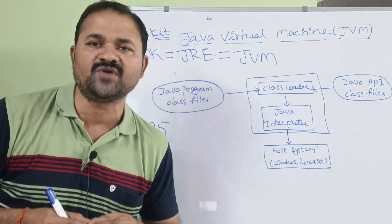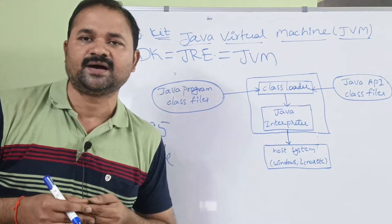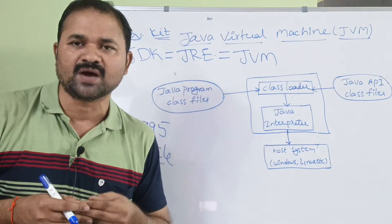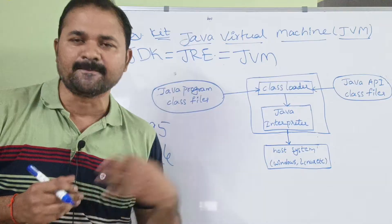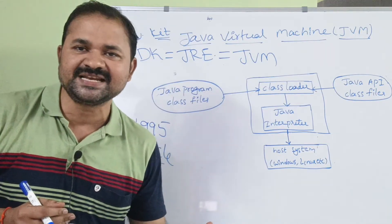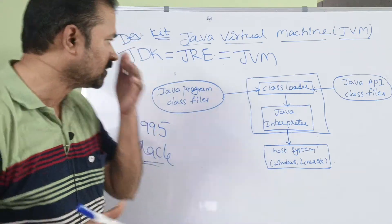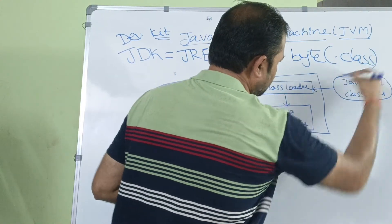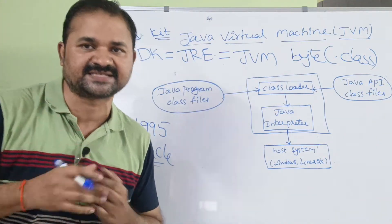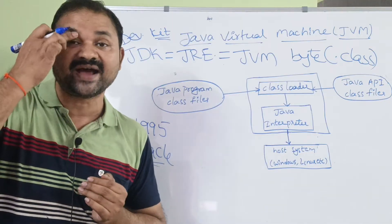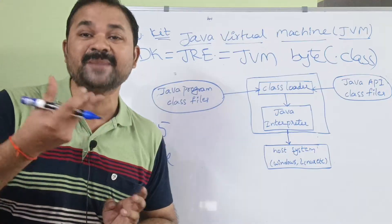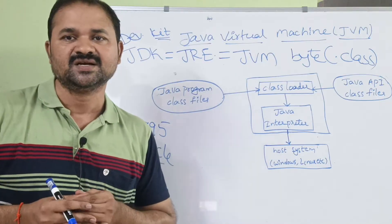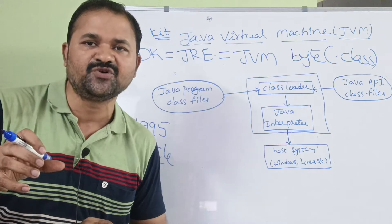JVM means Java Virtual Machine. We know that a Java program is a collection of classes. The compiler compiles the source program and translates source code into bytecode. Bytecode files have the extension .class. So if our program contains 5 classes, the Java compiler will produce 5 class files. But we only need to execute the main class — the class that contains the main method.